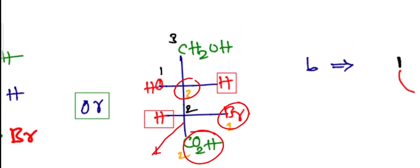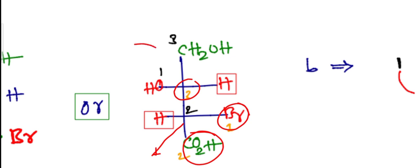Now what about the second chiral center, that is B? In the case of B, first priority goes to OH, second will go to this carbon because of higher carbon with Br, and third will go to CH2OH.